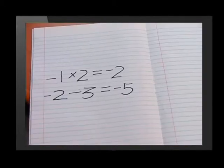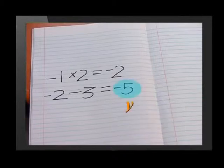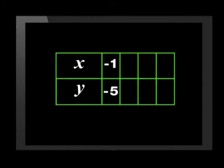In the example you just did, negative 1 was your x value. You did a calculation using the rule. The solution of negative 5 that you got in the end gave you your y value. We can put these values into a table of values like this.